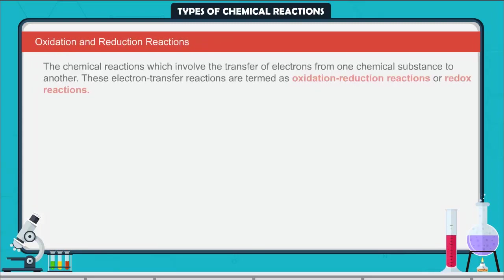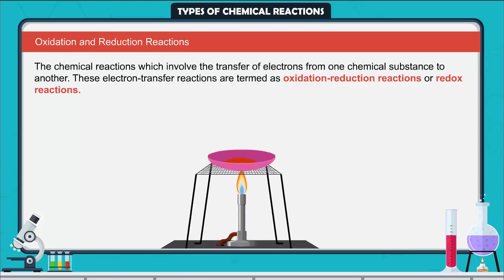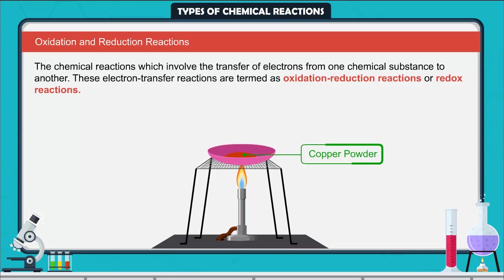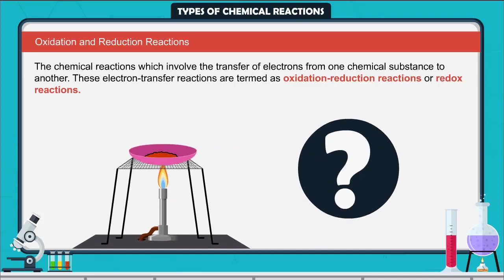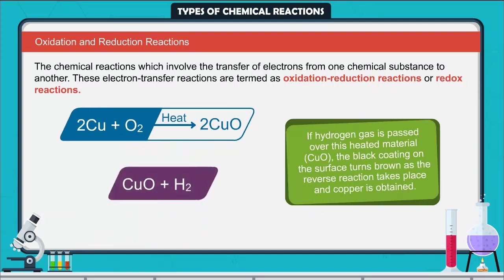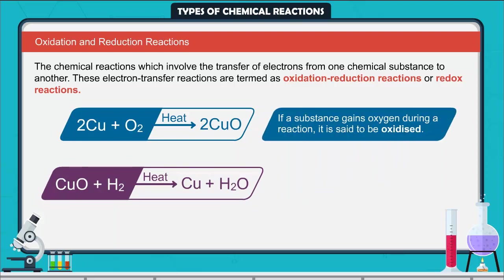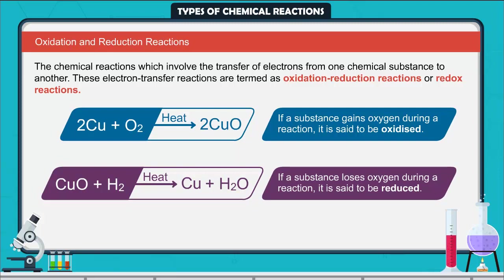Oxidation and reduction reactions. The chemical reactions which involve the transfer of electrons from one chemical substance to another are termed oxidation-reduction reactions or redox reactions. Activity: Heat a china dish containing about 1 gram of copper powder. The surface of the copper powder becomes coated with a black substance — copper oxide — because oxygen is added to copper. If hydrogen gas is passed over this heated material, the black coating turns brown as the reverse reaction takes place and copper is obtained. If a substance gains oxygen during a reaction, it is said to be oxidized. If a substance loses oxygen during a reaction, it is said to be reduced.